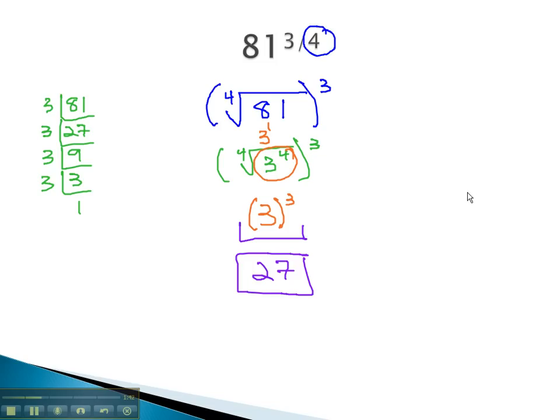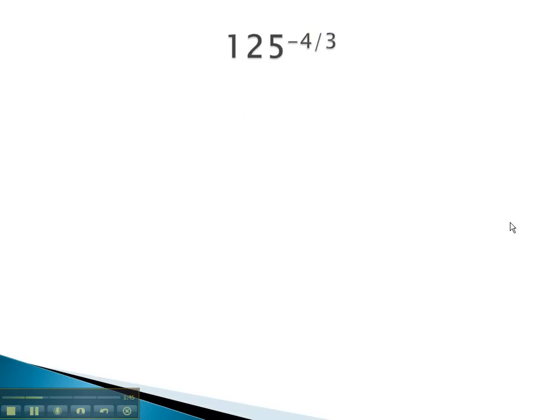Let's take a look at one more example, where we use the rational exponent converting to a radical in order to evaluate. In this problem, we see we've got a negative exponent. The negative exponent means we have a fraction 1 over the 125, and then the denominator on the fraction will become the index on the radical. The numerator of 4 will remain as an exponent.